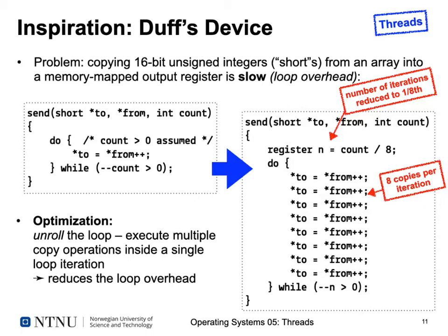The problem Tom Duff faced was that the device was faster than the CPU. For each single copy instruction, the loop required three additional instructions: decrement the counter, compare it, and conditionally jump back. So we execute four instructions for every one useful instruction — a lot of wasted CPU time. Tom Duff thought about how to reduce this overhead of always comparing, decrementing, and jumping.